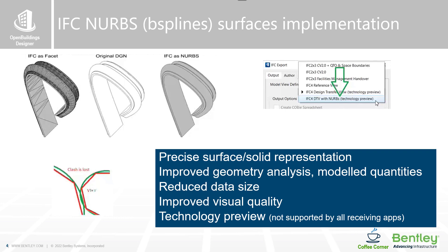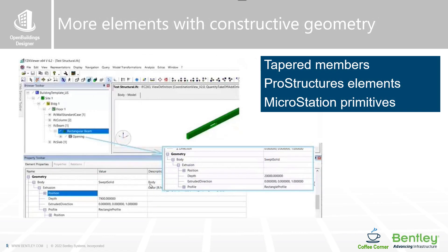Please bear in mind that not all receiving applications may be capable of supporting IFC4 and NURBS geometry. We have also improved constructive geometry fidelity and now provide more information about an entity such as beam profile, wall direction, void provision, and design transfer when exported to IFC.